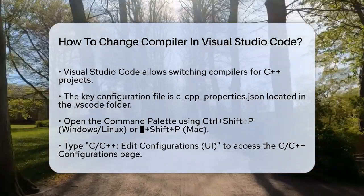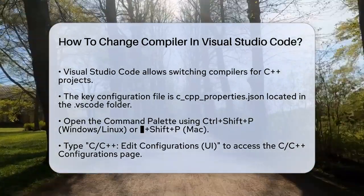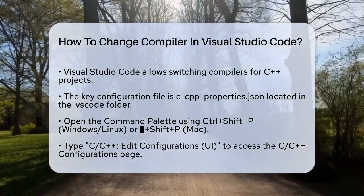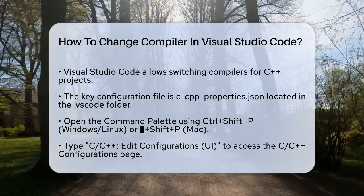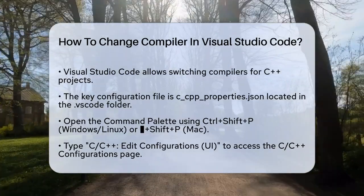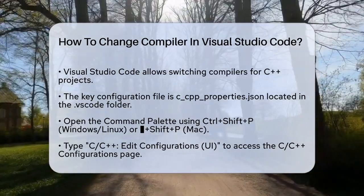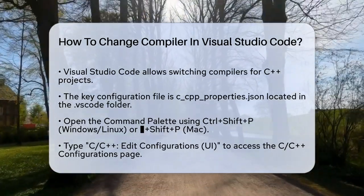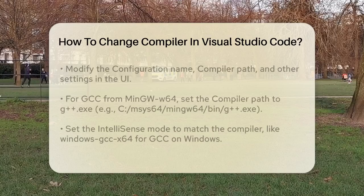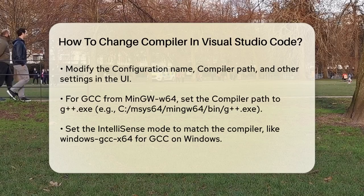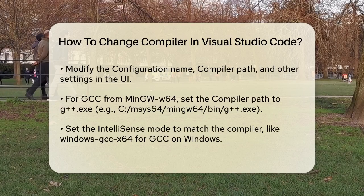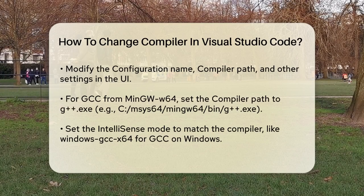Once the command palette is open, type C/C++ Edit Configurations UI and select it. This will open the C/C++ configurations page. Here, you can modify the configuration name, compiler path, and other settings.